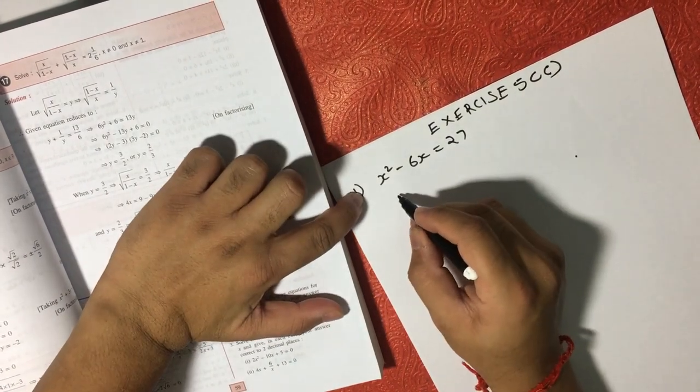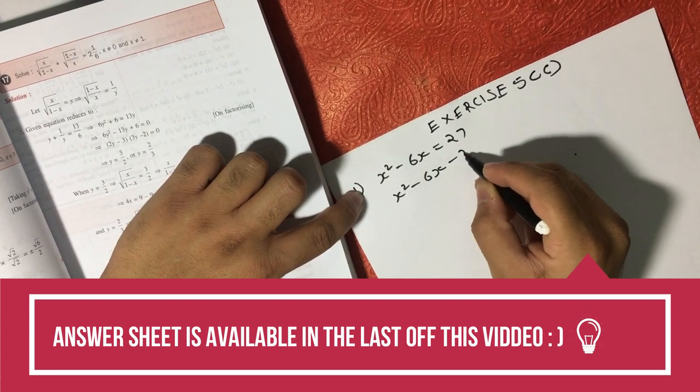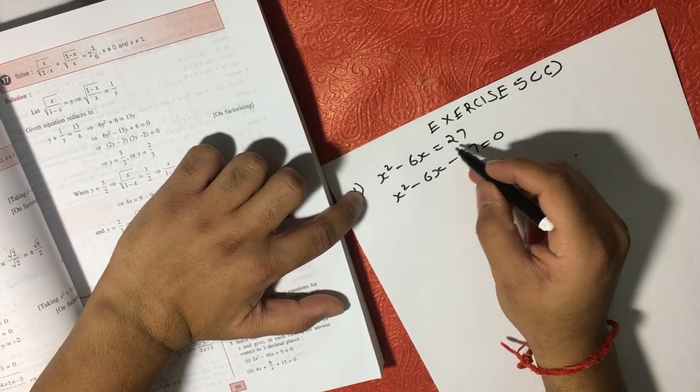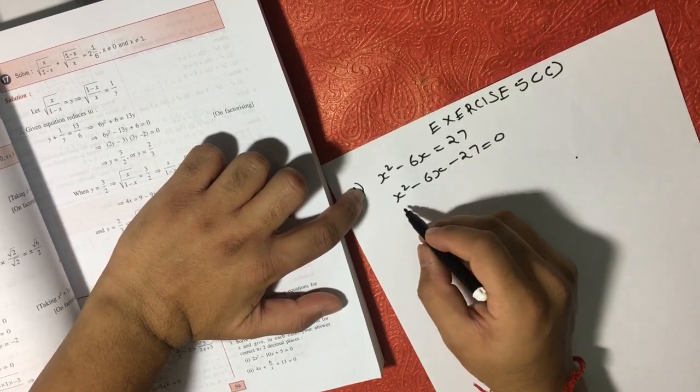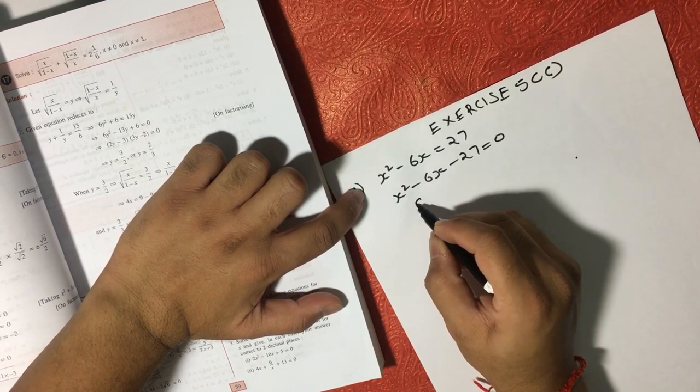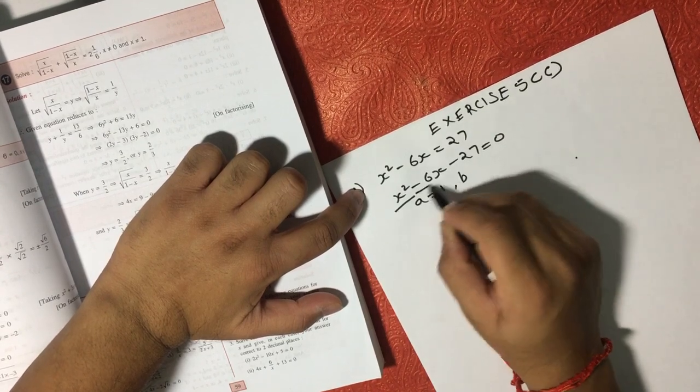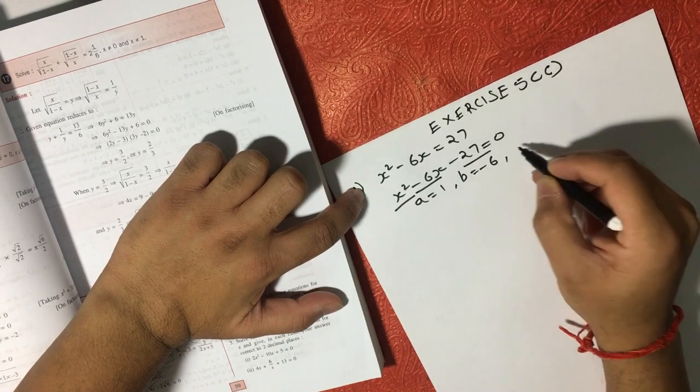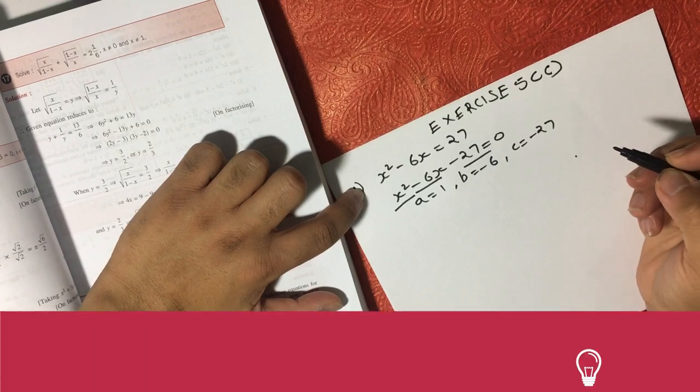We can also write this equation as x square minus 6x minus 27 is equal to 0. I can just move this 27 to left hand side. Now if we try to write this equation in a numerical format, we can say A here is equal to 1, b here is equal to minus 6, and c here is equal to minus 27.